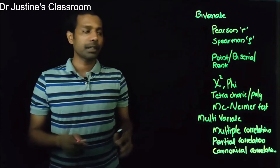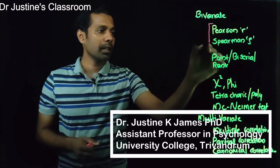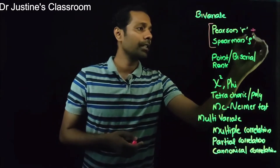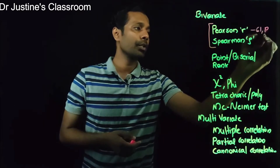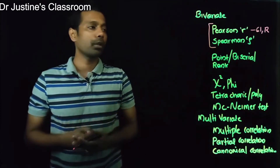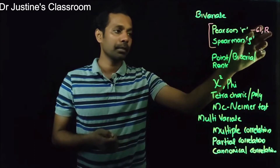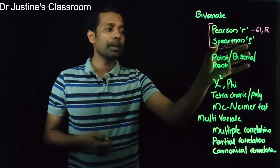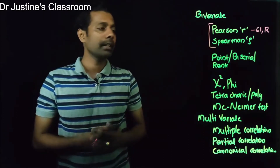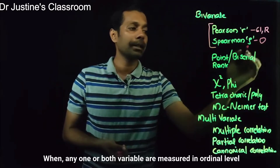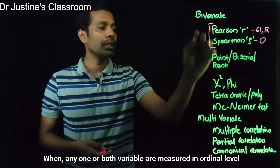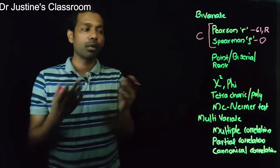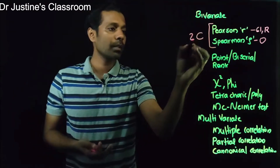Pearson r and Spearman rho are done when you have continuous data. When your data is either equal interval or ratio scale, you use Pearson product-moment correlation coefficient. If your data does not meet the assumptions of Pearson r — because Pearson r is a parametric test — you may have to go for Spearman rho, which is a non-parametric test. Spearman rho can also be used when both variables are ordinal. Both analyses require both variables to be continuous in nature.